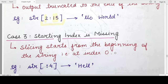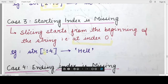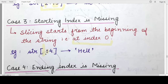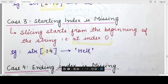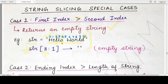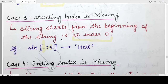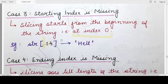The third special case: what if the starting index is missing? In this case, the interpreter automatically takes 0 — the first index — as the starting index, and the ending index is the one specified by the user. There is no character before the colon; you can directly write the colon just after the square bracket. When you do this and specify the end index, string slicing will begin at the very beginning of the string and go till the ending index minus 1. For example, with end index 4, you get 'hell' — from index 0 up to index 3.